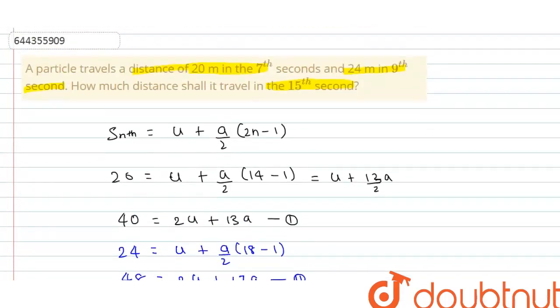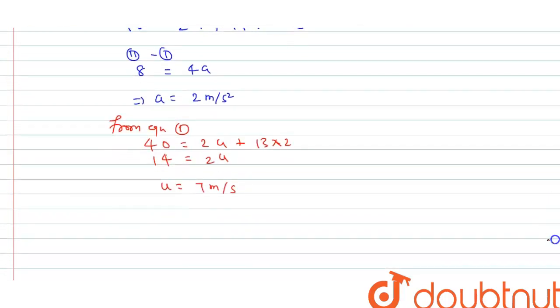Now we have to calculate distance traveled by body in 15th second. So distance traveled by body in 15th second is equals to u plus a by 2, 2n minus 1.